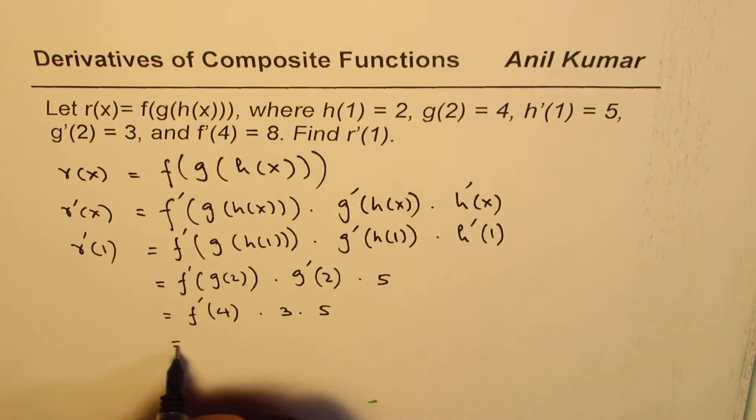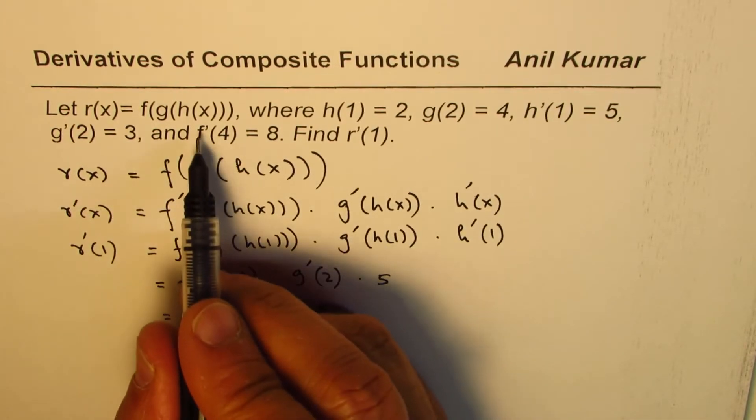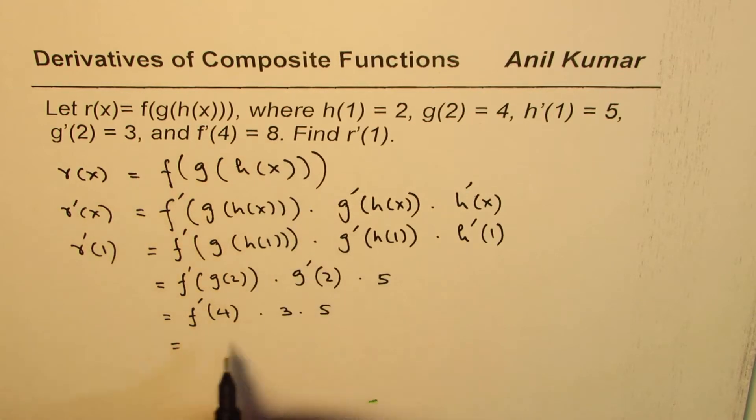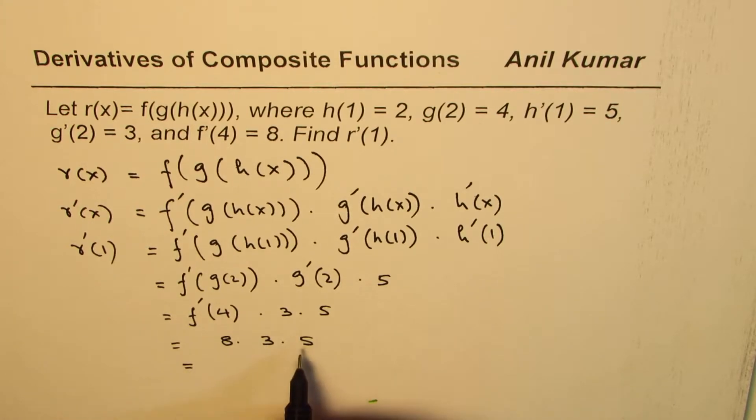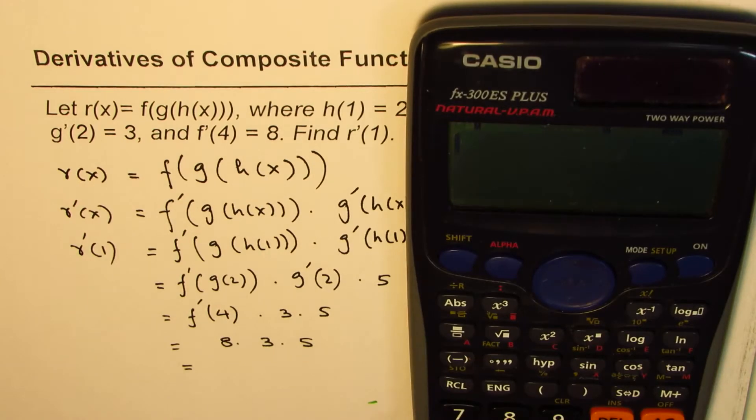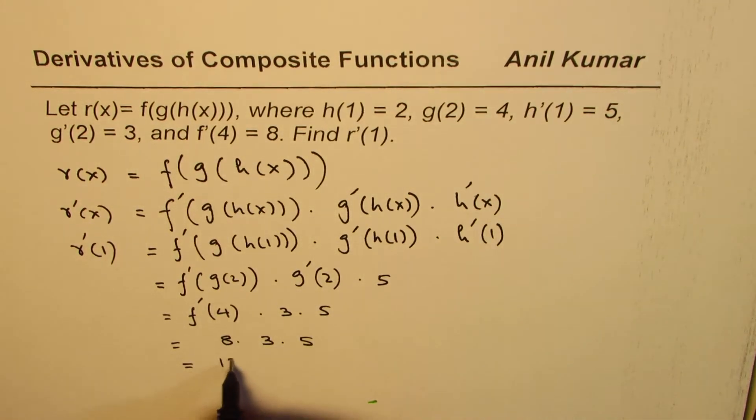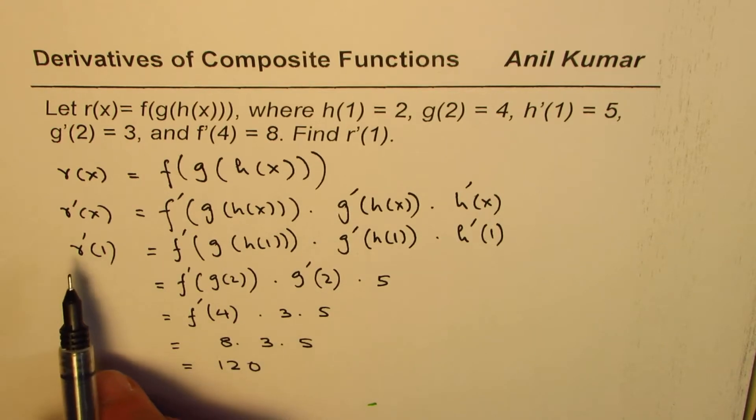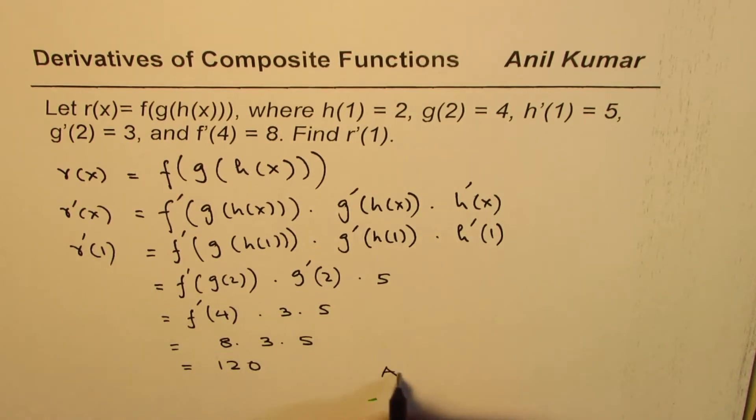Now the derivative of f at 4 is 8, so we'll replace this by 8. So we have 8 times 3 times 5. When you multiply this, what do you get? Let's do it. 8 times 3 times 5 = 120. So 120 is actually r'(1), so our answer is r'(1) = 120. The derivative of the function r at x = 1 is 120.